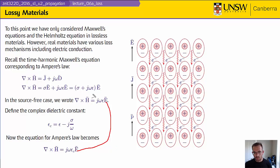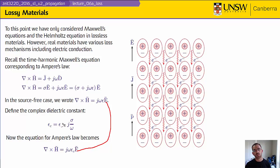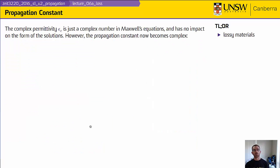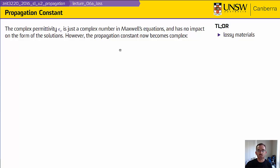Epsilon is predominantly real, but epsilon in and of itself can have a real and imaginary part as well, because there are loss mechanisms associated with the movement of the bound charges. In the macroscopic classical sense, you can't distinguish these loss mechanisms — so any complex portion of the permittivity gets added to the complex permittivity-like term that comes from the conductivity, and we just lump them all together. We have this complex permittivity, which is just a complex number that shows up in Maxwell's equation, so it has no impact on the form of the solutions except that several of the constants now become complex.